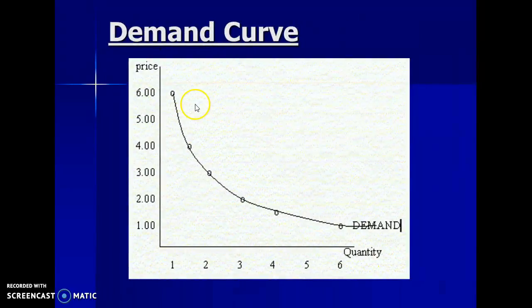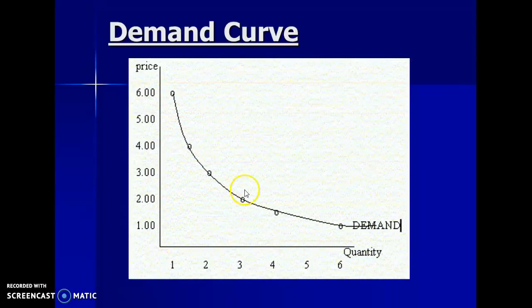Graphically, the demand curve is negatively sloping. When price is at six, demand is only one. As price goes down to one, demand increases to six. That is the law of demand.